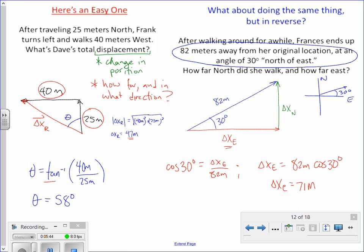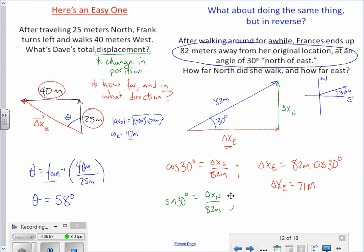To find delta x north, I would use sine. Delta x north over 82 meters. Therefore, delta x north is 82 meters times the sine of 30 degrees. Since sine of 30 degrees is 0.5, that's 41 meters. If you put 41 and 71 into the Pythagorean theorem, you get 82 meters. And if you take the inverse tangent of 41 over 71, you get 30 degrees.